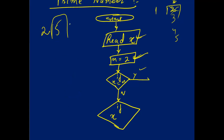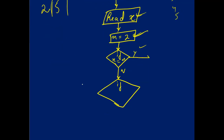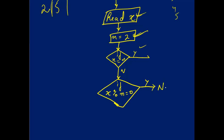Suppose the number is 5: 5 percent 2 gives remainder 1. I check if x percent n equals 0. If x percent n is equal to 0, then the number is not prime, and I print 'not prime'. If it is not divisible — meaning the remainder is not 0 — then I move forward to check with the next divisor.